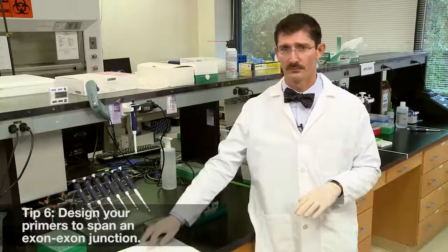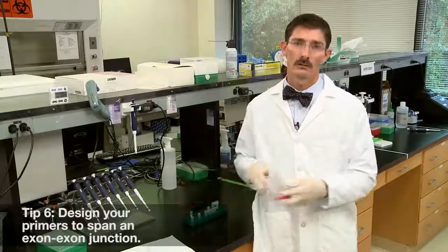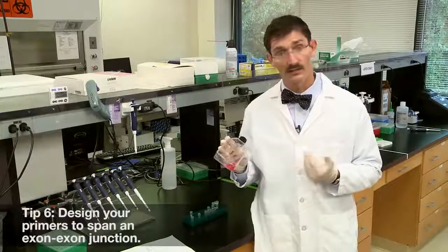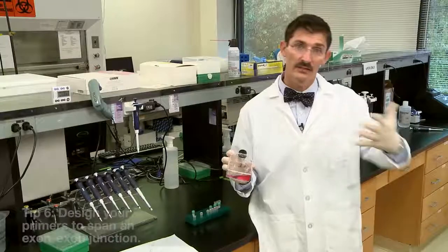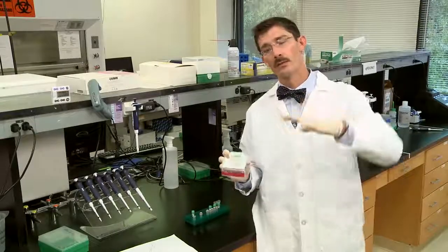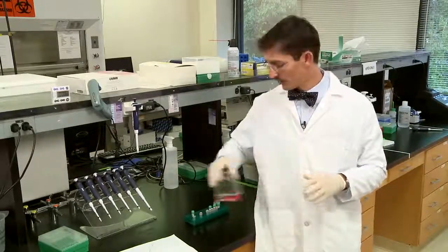Tip number six: if you're working with gene expression in eukaryotic cells, make use of the introns and design your primers to span an exon-exon junction. That way it will prevent you from amplifying contaminating genomic DNA.